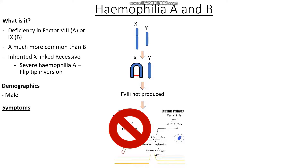What sort of symptoms might we expect to see in patients with haemophilia A and B? The first thing we may notice as a neonate is prolonged bleeding in the heel prick test. In the UK, around 5 to 9 days in, babies are often pricked in their heel to check for a whole host of genetic conditions, and haemophilia may increase the time the baby bleeds from its heel.